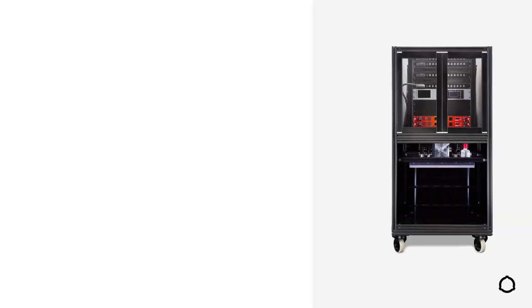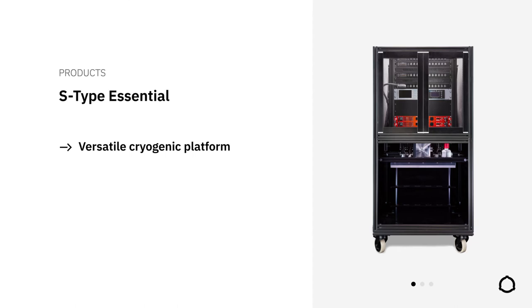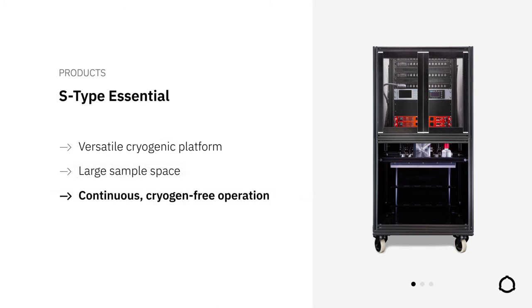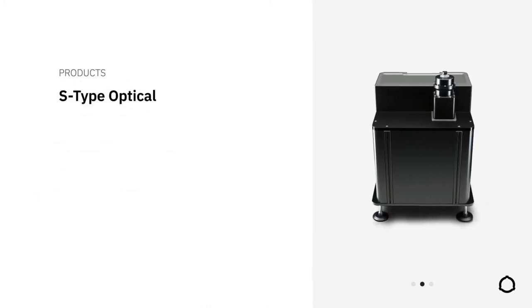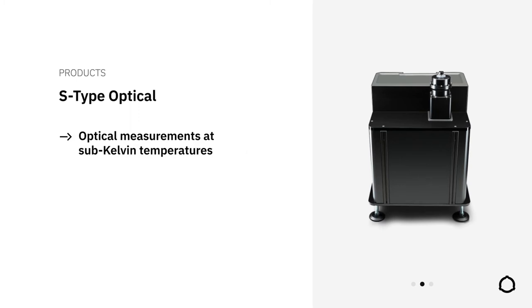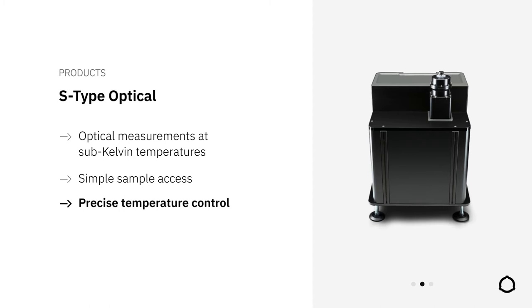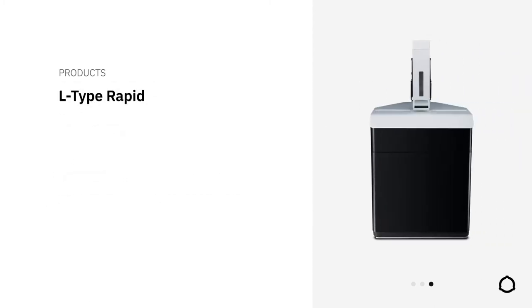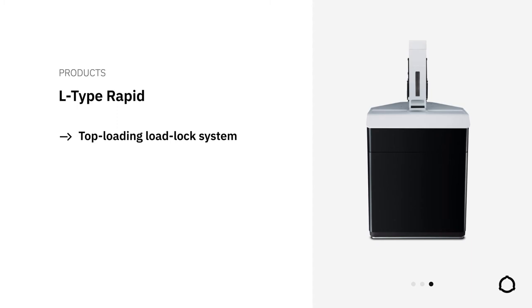First, the S-Type Essential, a versatile and ultra-compact sub-Kelvin system that offers a large sample space for complex customer setups and can serve as a platform for the continuous operation of quantum detectors. Second, the S-Type Optical, a compact sub-Kelvin cryostat derived from the S-Type Essential. It offers free beam optical access and an easily accessible sample stage as well as ultra-precise temperature control. Third, our L-Type Rapid, a fast characterization tool offering top-loading of samples, continuous operation down to 300 mK and one-shot operation to 100 mK with sample cooldown times of less than 3 hours.